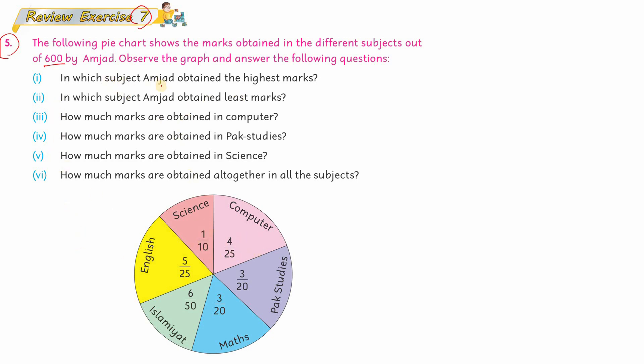In which subject Amjad obtained the highest marks? To find the highest marks, you will have to calculate each subject. If you observe, in Computer there is 4 by 25. This means you will multiply it by 600. When you multiply by 600, this is divisible by 25 because 600 is on the 25 table.